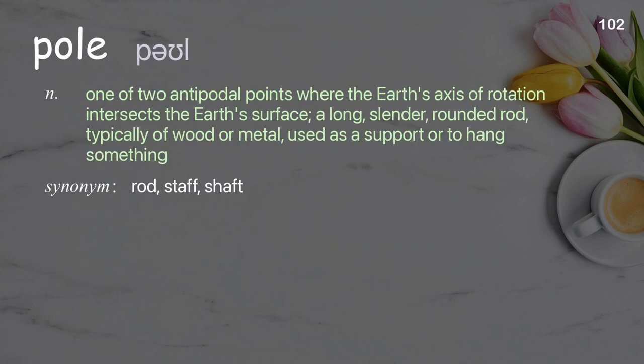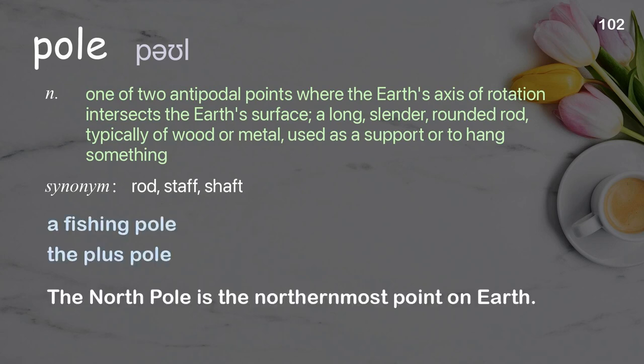Pole. One of two antipodal points where the Earth's axis of rotation intersects the Earth's surface; a long, slender, rounded rod, typically of wood or metal, used as a support or to hang something. Examples: a fishing pole, the plus pole. The north pole is the northernmost point on Earth.